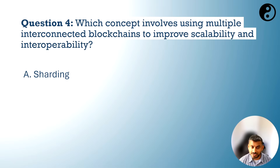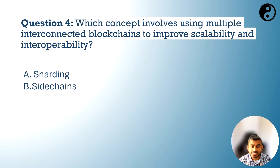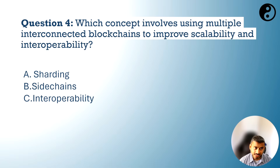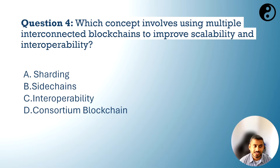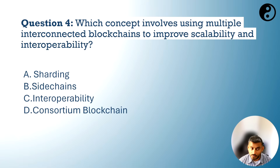Your options are A. Shorting? Is it B. Sidechains? Or C. Interoperability? Or is the answer D. Consortium blockchain?